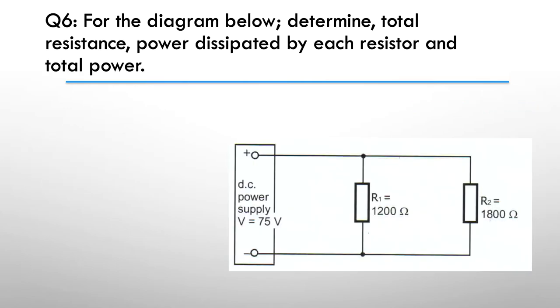Question six, for the diagram below, determine the total resistance, the power dissipated by each resistor, and the total power. So we want resistances, power, etc. So inverse of the addition of the inverses for resistance. And don't forget ohms law for power. What are the three ohms law power equations? Again, use your equation sheet.